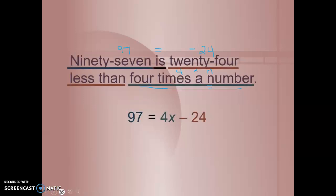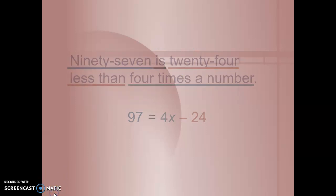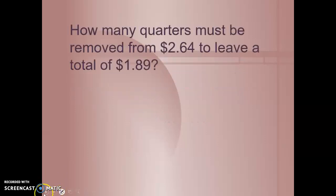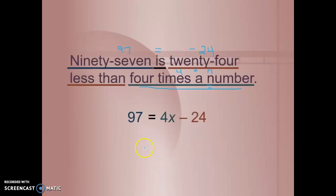Then we would just follow our steps to solve for x. Let's go ahead and solve. See if you can solve this on your own and come back and check your work. Add 24 to both sides. And after you've done that, these 24s cancel. We get 121 equals 4x. We would divide both sides by 4 to get the x all by itself. And we're going to get a decimal is what it looks like. Unless I added wrong. But I think we're going to get a decimal.